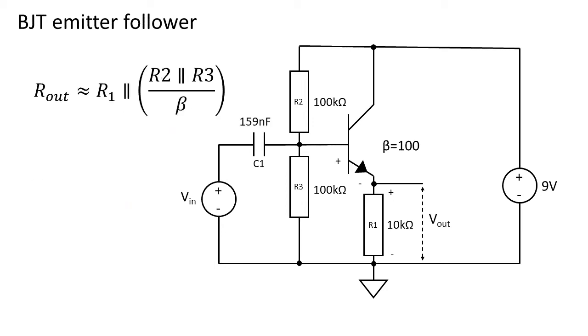The output impedance of this circuit is approximately R1 in parallel to R2 in parallel with R3 divided by the beta. This results in an output impedance of around 476 ohms.